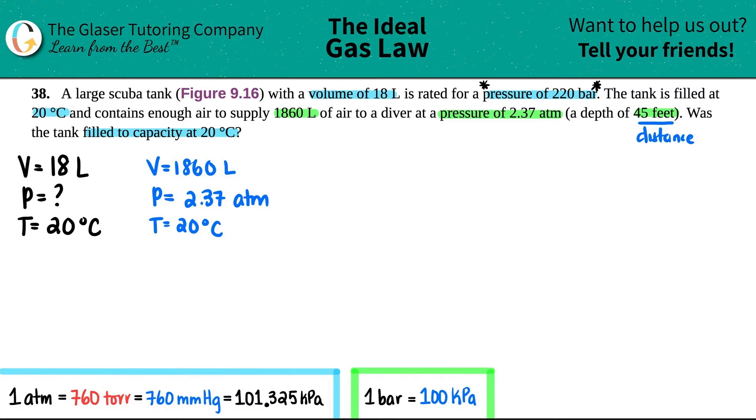So now from here we have to figure out what formula to use. Remember, if you see that you have sets of variables—meaning you have two volumes, you got two pressures, you got two temps—we're using the combined gas law, which is this one.